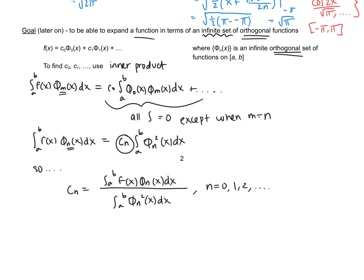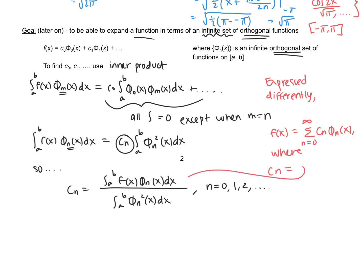Expressed more formally, we write f(x) as the sum from n equals 0 to infinity of c_n·φ_n(x), where c_n equals the inner product of f with φ_n divided by the magnitude of φ_n(x) squared, all times φ_n(x). This is just a preview of where we're headed with these orthogonal functions.